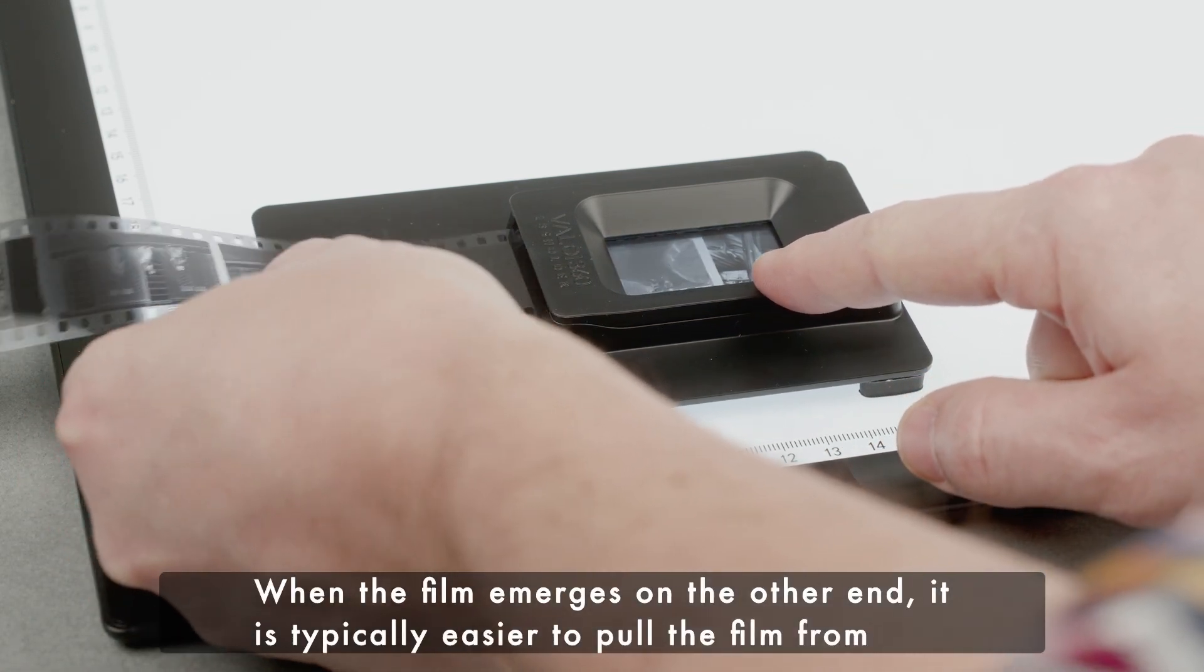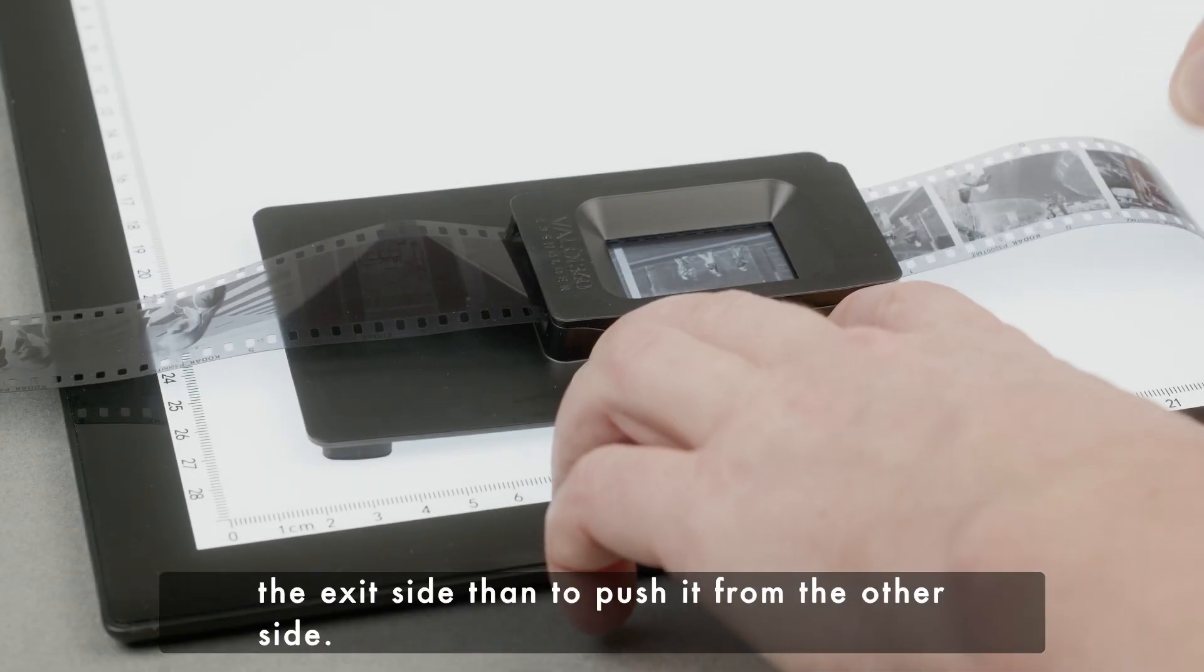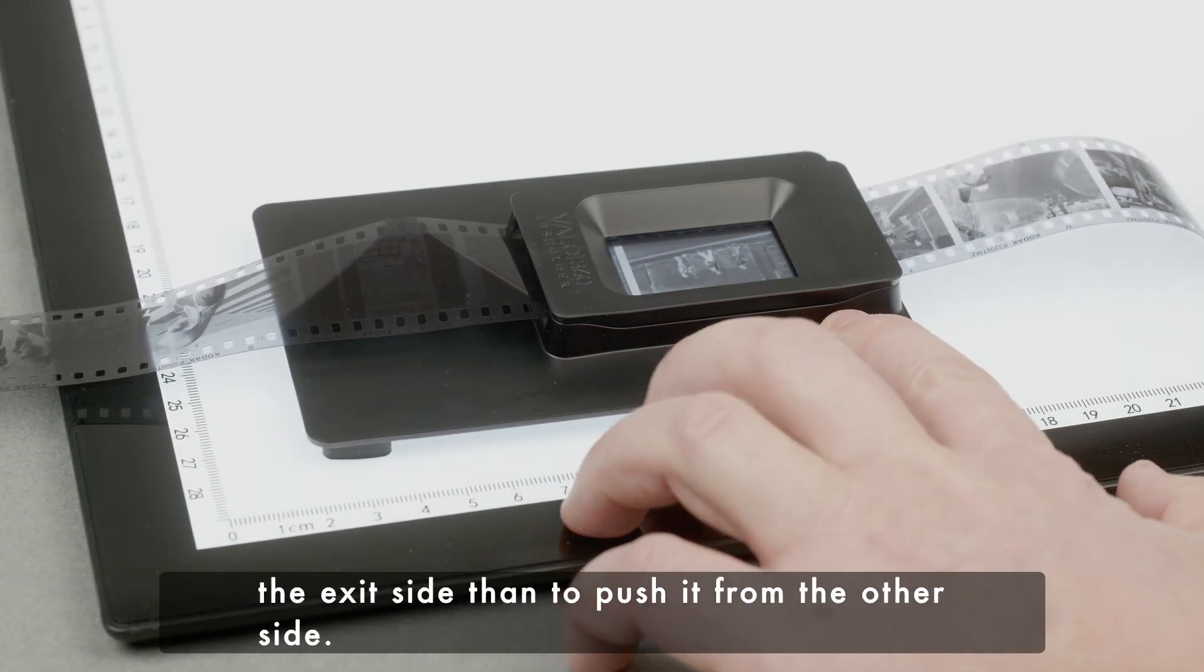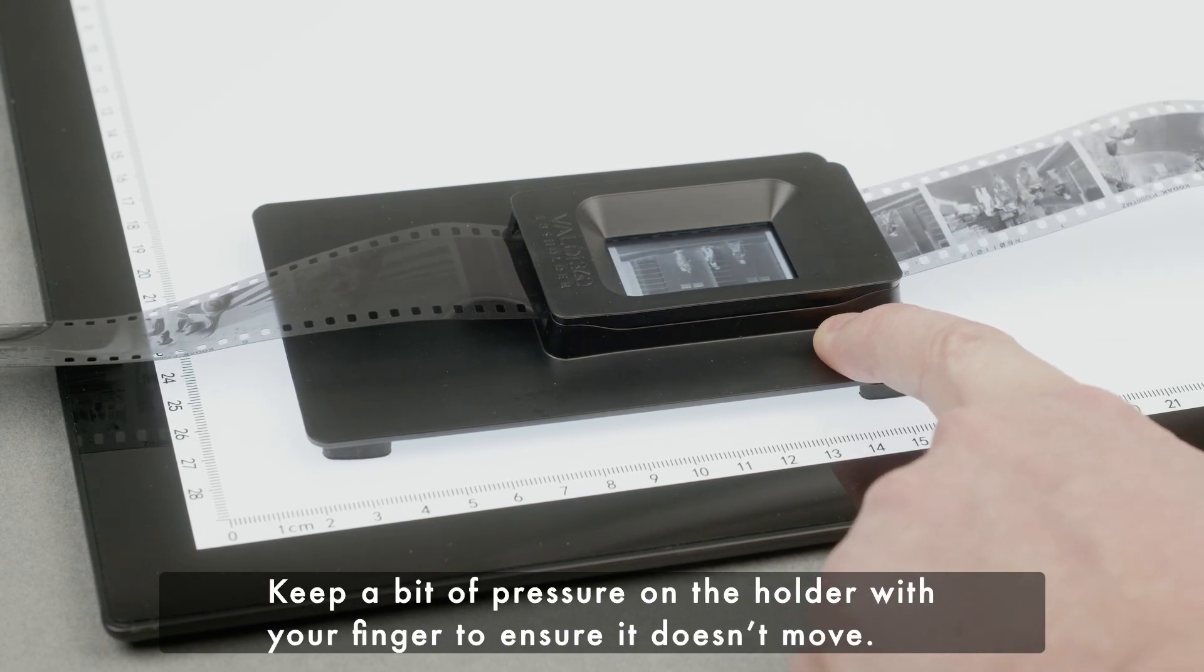When the film emerges on the other end, it is typically easier to pull the film from the exit side than to push it from the other side. Keep a bit of pressure on the holder with your finger to ensure it doesn't move.